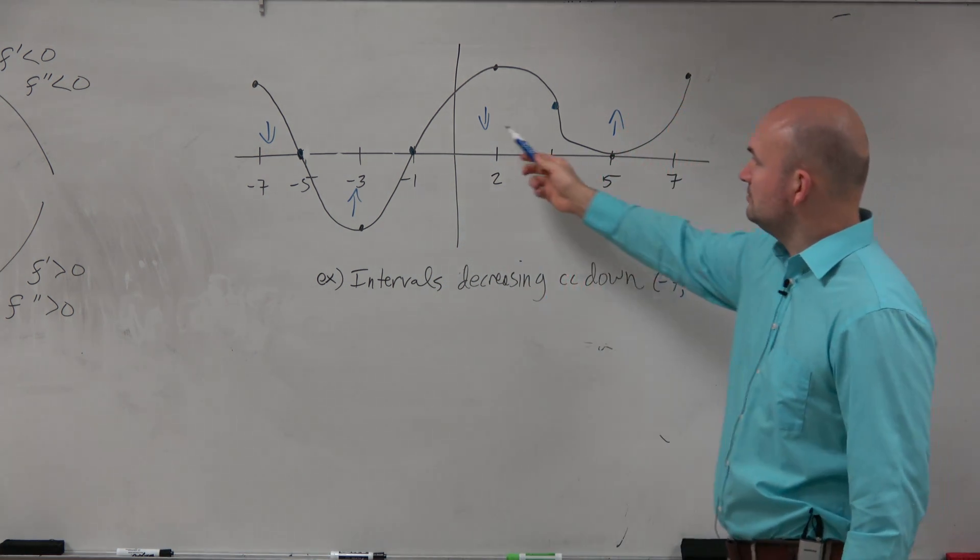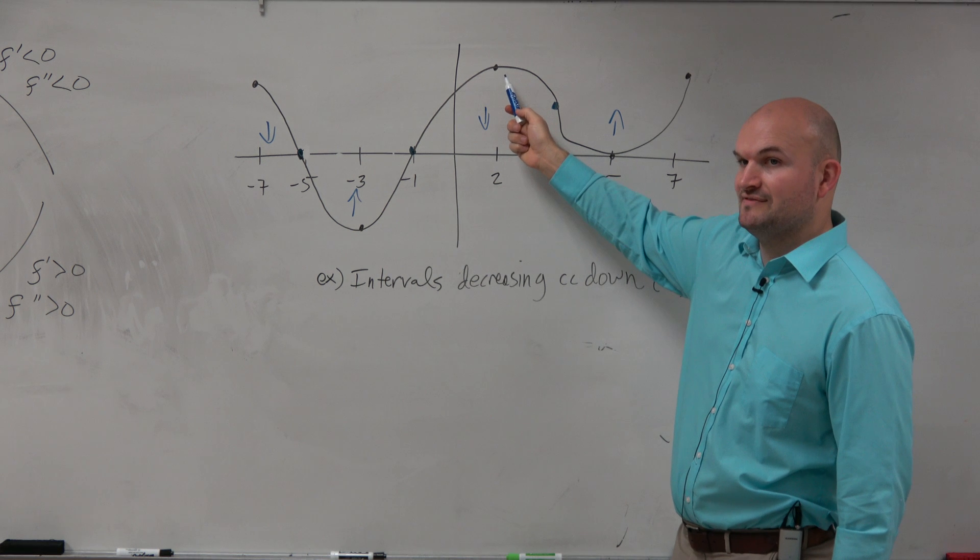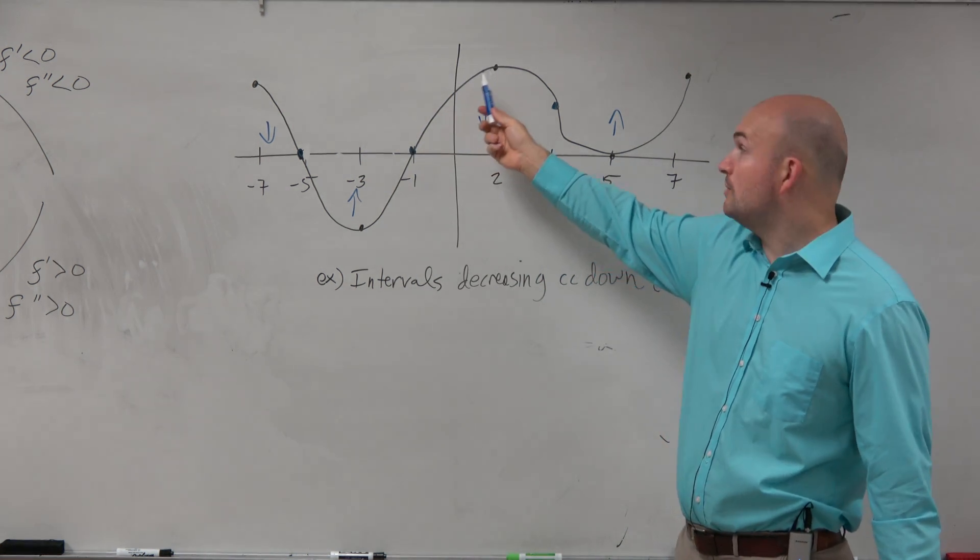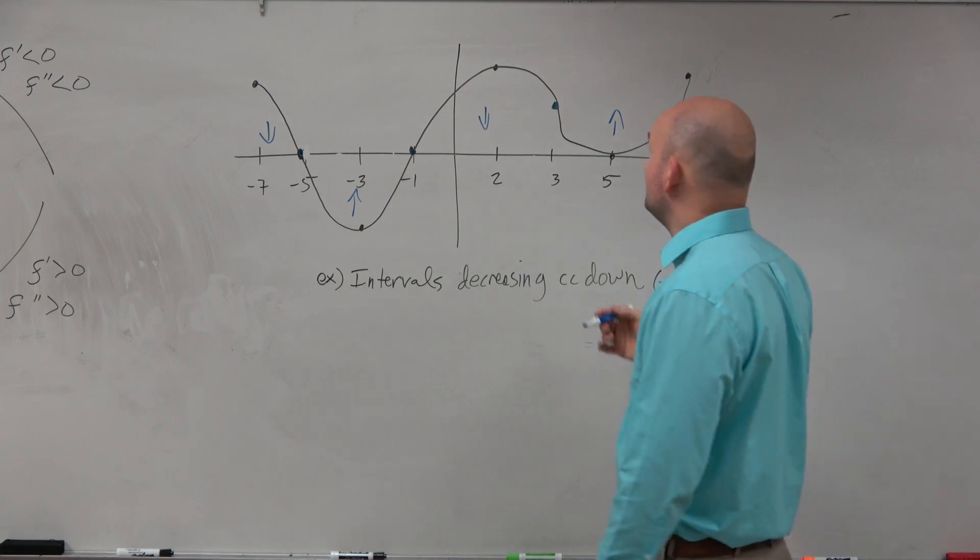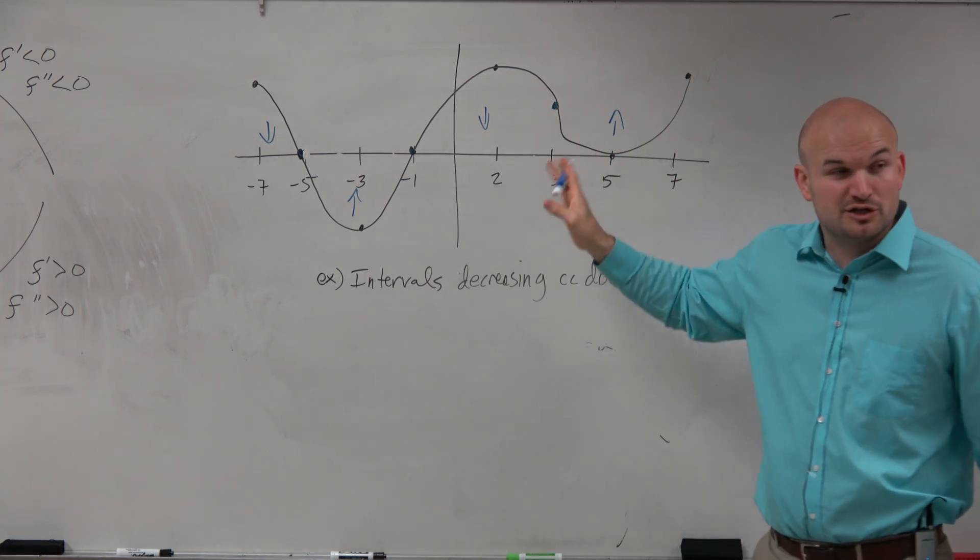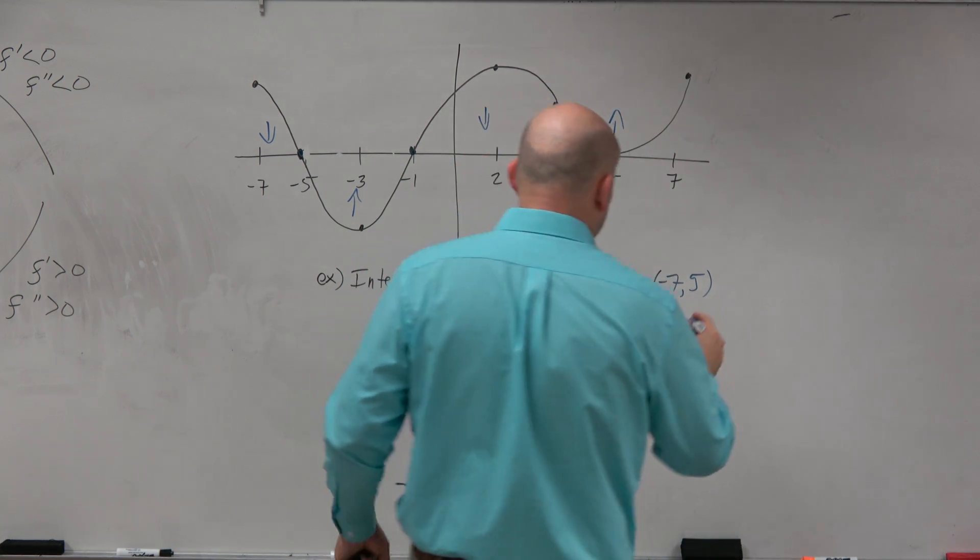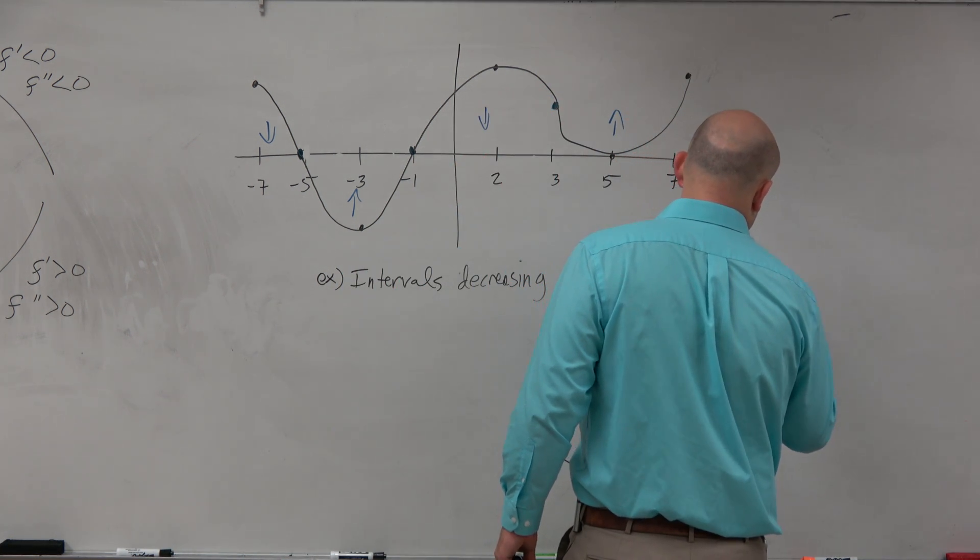And then we could also say, well, here, from negative 1 to 2, it's concave down. But the slopes are positive, right? So we want to look where it's negative, which would be, again, from 2 to 3. And again, we want to go to 3, because that's the inflection point. That's where it's changing. So we'd say the other interval, we could just say union 2 to 3.